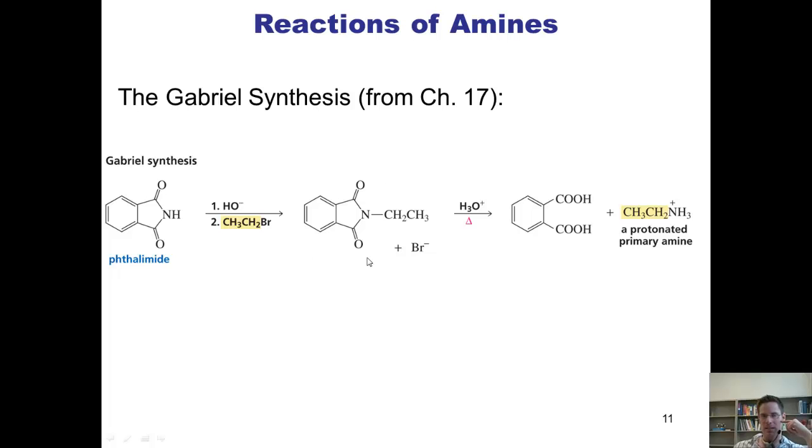If I take this intermediate, I can then hit it with acid and heat, and it will hydrolyze off the amine and give me a free protonated primary amine as my exclusive product together with this dicarboxylic acid. That protonated amine can, of course, be neutralized to give me primary amine as my exclusive product.